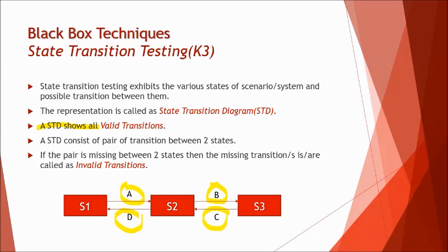Now the next point, how do you identify the invalid then? Because you have been very common with equivalence partition and boundary value analysis, then you realize there are valid test cases and invalid test cases as well. So how do you identify the invalid test cases in STD? First of all, let's understand, STD consists of pair of transition between two states. That means when I have two different states, that is S1 and S2, it consists of pair of transition between them. That means a path onwards and return, S1 to S2 and S2 to S1. But in case if the pair is missing between two states, then the missing transition or transitions are called as the invalid transition.